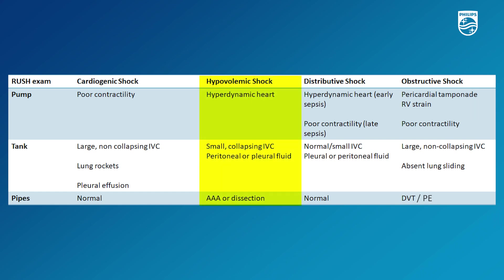Hypovolemic shock, on the other hand, involves loss of volume — it's primarily a tank or pipe issue. The heart will be trying to compensate, so you will notice a hyperdynamic heart. There may be a small or collapsing IVC because there is lack of fluid within the system. You may also notice evidence of an AAA or dissection when inspecting the pipes.